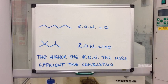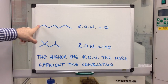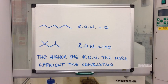So I'm introducing you to the RON number, which stands for the research octane number. So if you look at this straight chained alkane, this is heptane. That's given an RON value of zero.